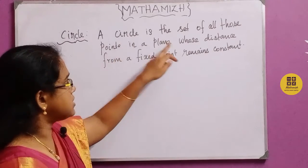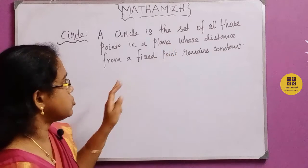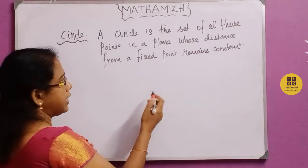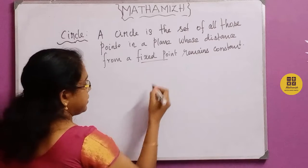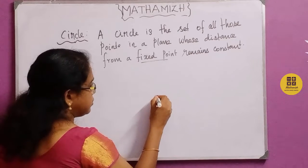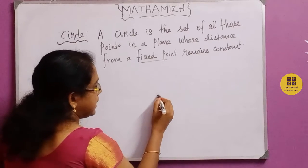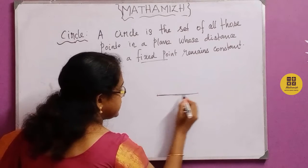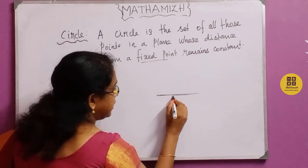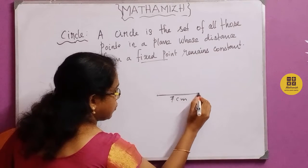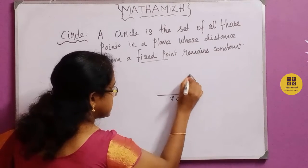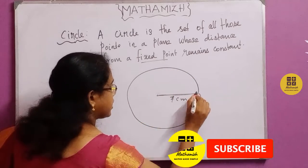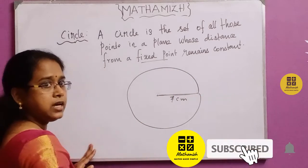The circle is a set of all those points. If we take a plane and consider from a fixed point — this is the fixed point — it remains at a constant distance. If we take 7cm and rotate it at a constant distance, we will rotate it in a full plane and cover it in a circle.